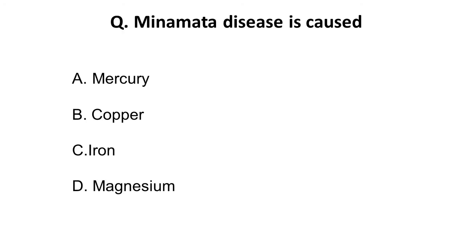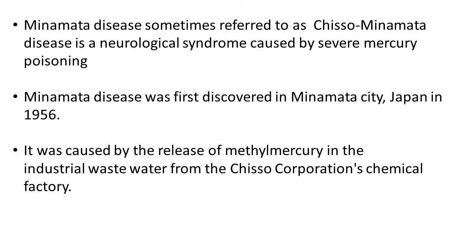Moving on to the first question: Minamata disease is caused by? This is a famous disease which occurred in Japan. The options are: A) Mercury, B) Copper, C) Iron, D) Magnesium. The correct answer is A) Mercury — mercury is the metal which causes Minamata disease.